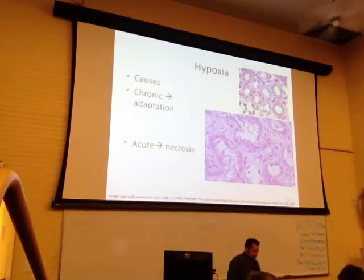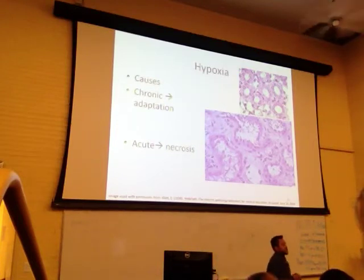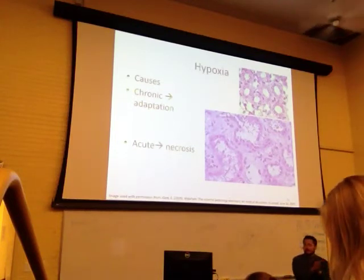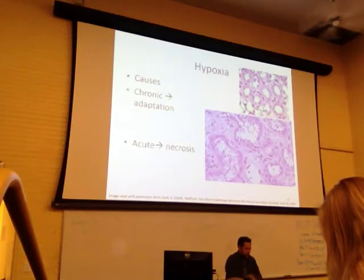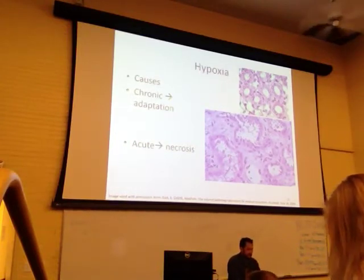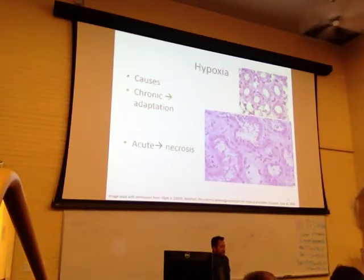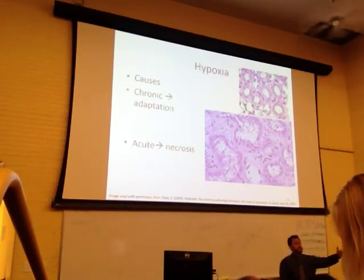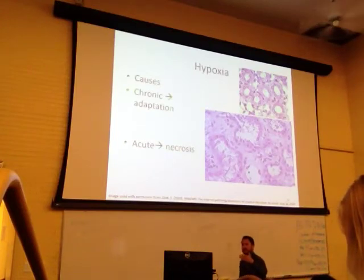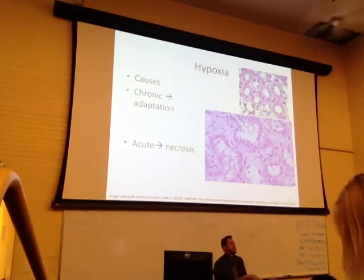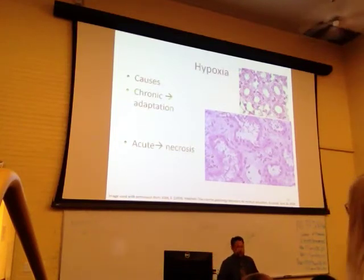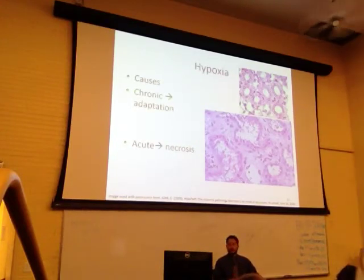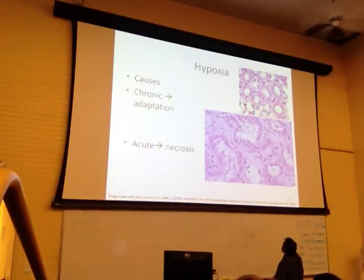Hypoxia is one of the big main causes of cellular injury — referring to a low oxygen environment. The most common cause is ischemia, where you've reduced blood flow to the tissue and stimulated a hypoxic environment of low oxygenation. The classic example used today is the kidney tubule: the upper right image is normal kidney tubule, and the lower right image is acute tubular necrosis.